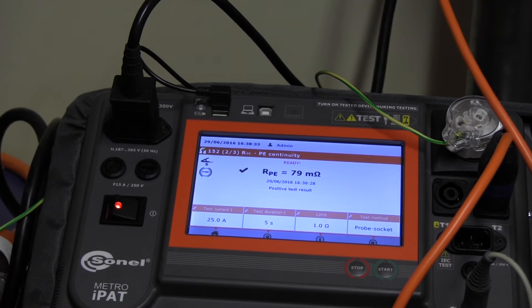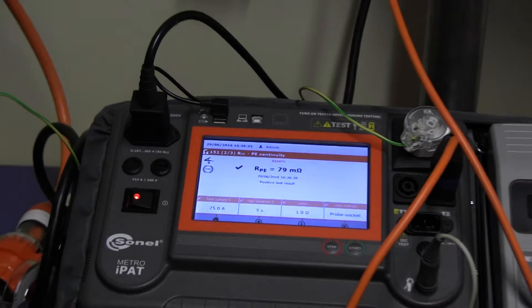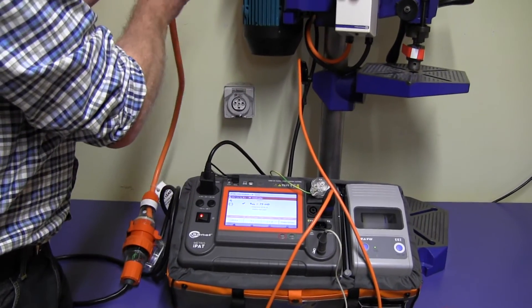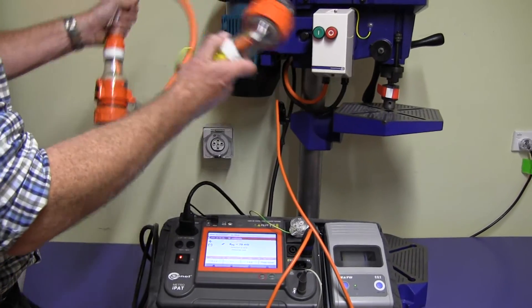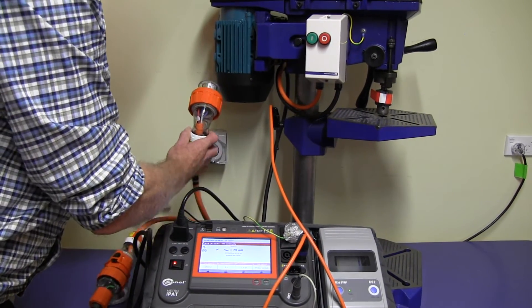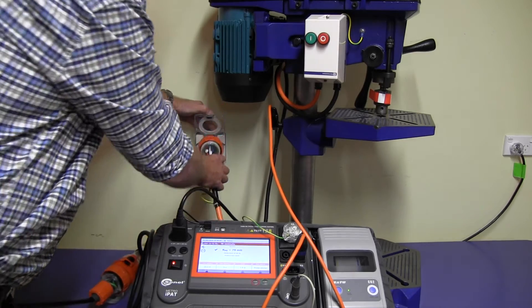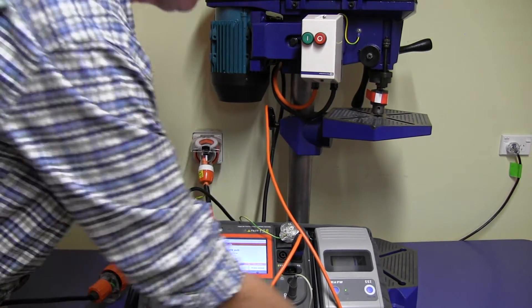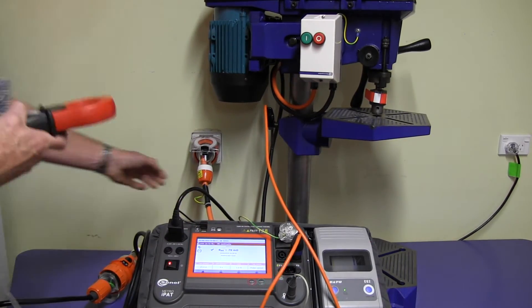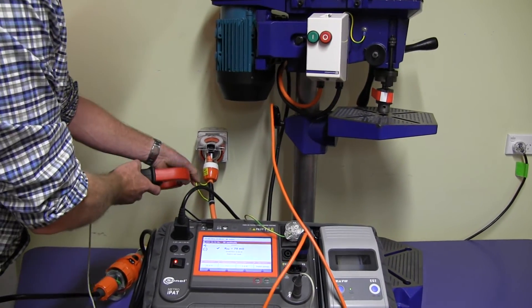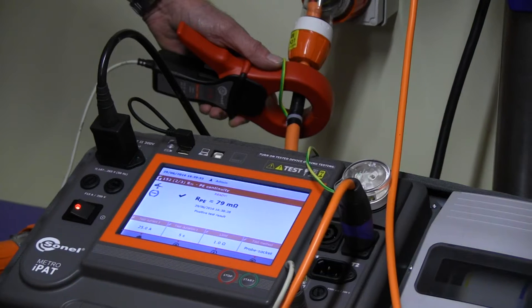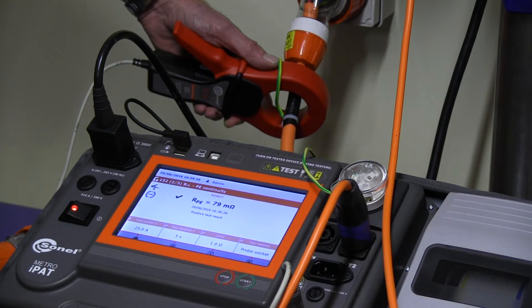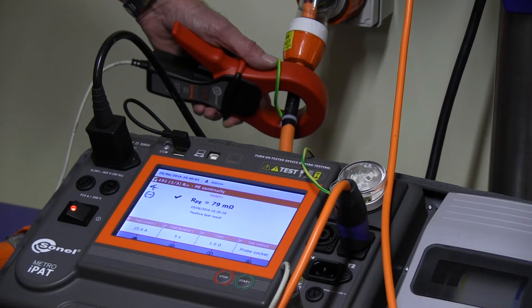Now we disconnect the earth wire and plug this short adapter lead into the three-phase socket. Then we find the clamp and put it around. We've done the earth test and now we're about to do the powered up leakage test.